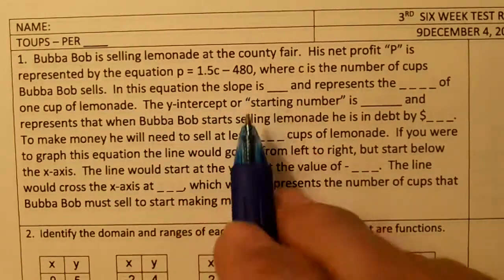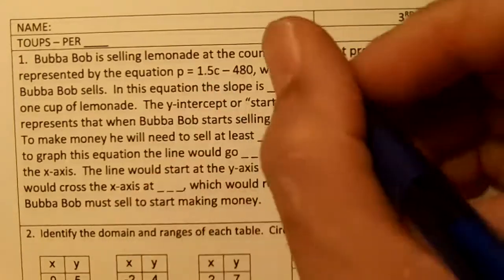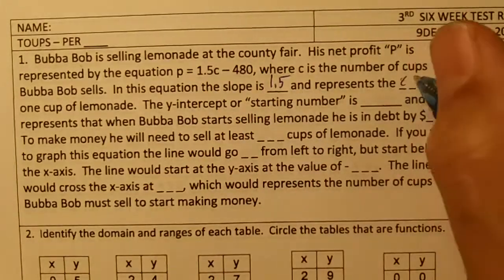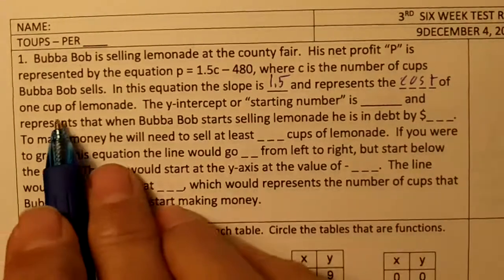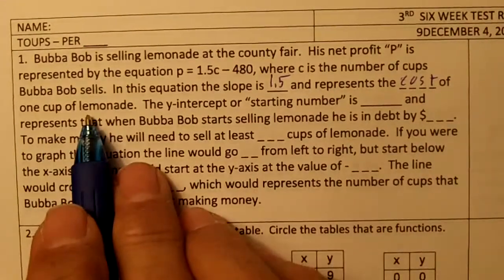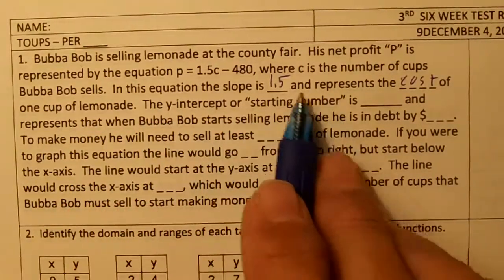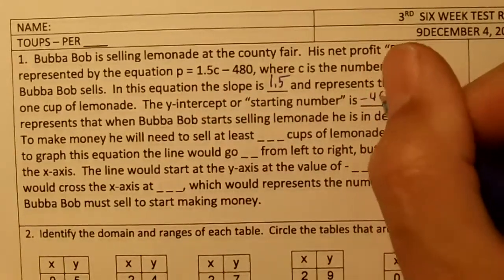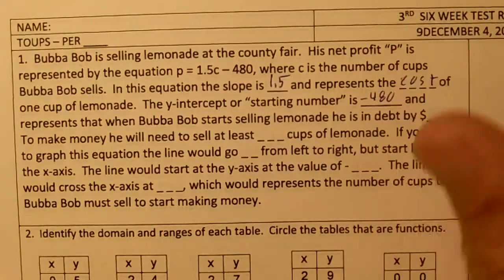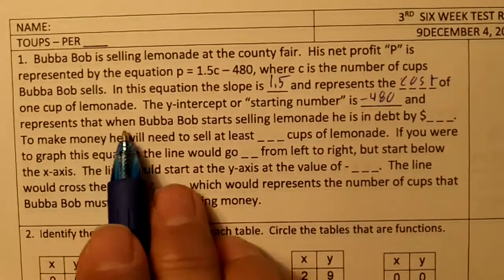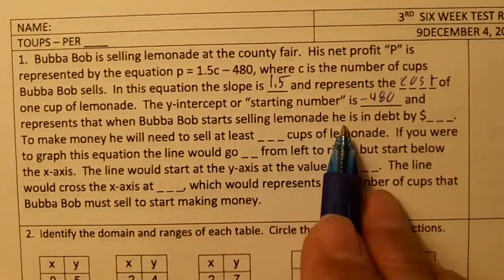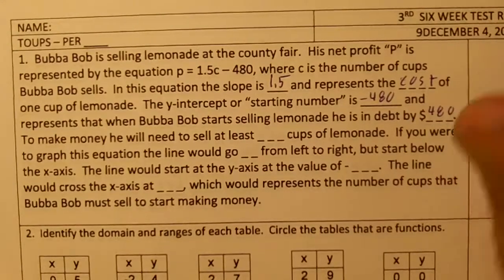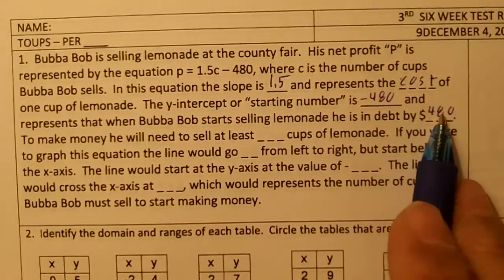In this equation, the slope is the number in front of the variable, which is 1.5, and represents the cost of one cup of lemonade. The y-intercept, or starting number, is the constant, which is negative 480, and represents that when Bubba Bob starts selling lemonade he is in debt by $480 — it costing $480 to start.